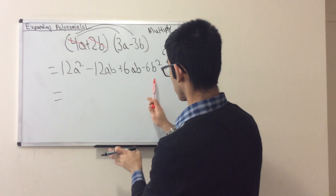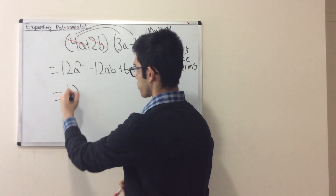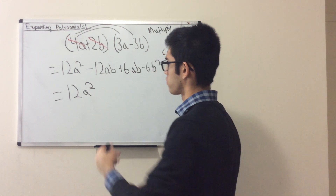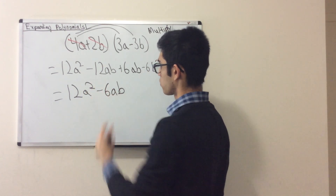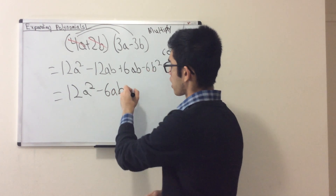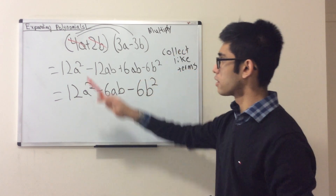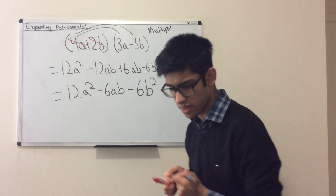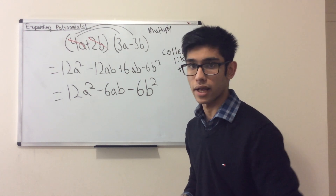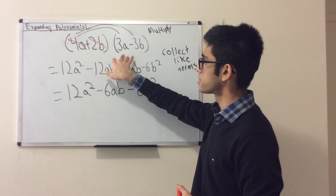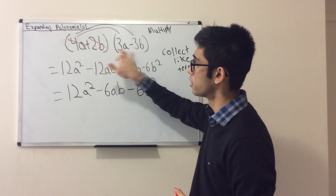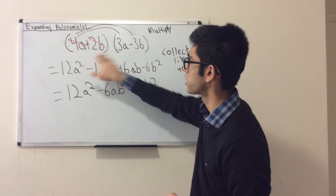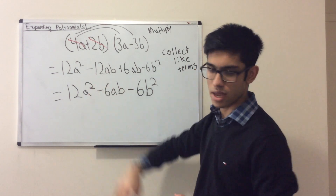Now collect like terms. 12a squared — nothing else like it, so bring it down. Negative 12ab plus 6ab: negative 12 plus 6 is negative 6, so negative 6ab. And negative 6b squared stays the same. Final answer: 12a squared minus 6ab minus 6b squared. Take your first term, multiply by both terms in the other binomial; take your second term, multiply by both terms; cross them out when done. Then collect like terms and you're good to go.